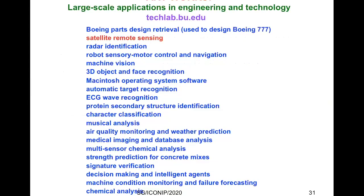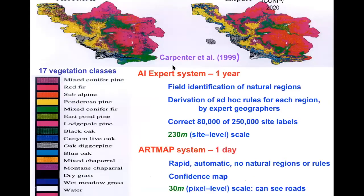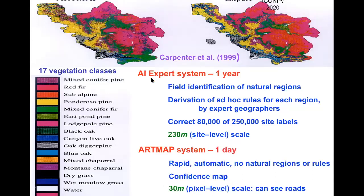Satellite remote sensing is another large-scale application that ART was used for very soon, with Gail Carpenter and her colleagues taking the lead. Using a very small number of pixels of ground truth of 17 vegetation classes, they used ART to automatically complete vegetation maps using remote sensing data. ART did it in a day, rapidly and automatically, giving a confidence map for each pixel at 30-meter scale — small enough to see roads. This contrasted with an AI expert system that took a whole year, required deriving ad hoc rules from experts, and had a pixel size an order of magnitude larger.